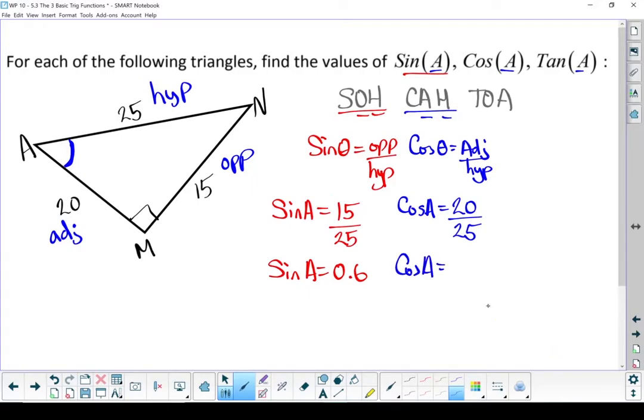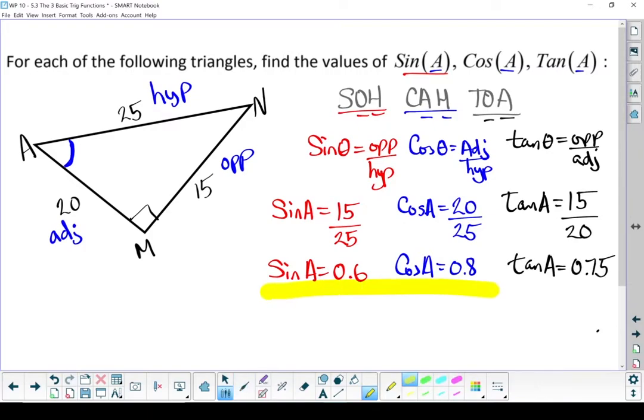And let's end it off with tan of theta. Tan of theta equals opposite over adjacent. Once again, we're working from angle A, so tan of angle A equals, my opposite side is 15, my adjacent side is 20. Turn that fraction into a decimal. Tan of angle A equals 0.75. And there are my three trig ratios for angle A. Remember, this is still just pre-skills. Next section, those ratios we're going to use to find out information about this triangle.